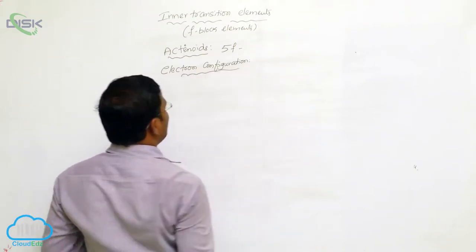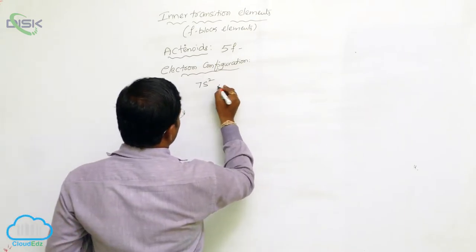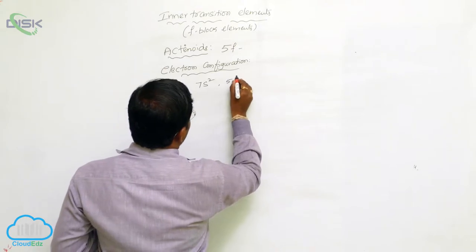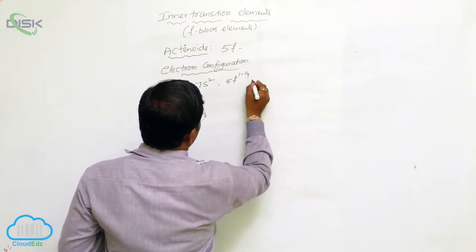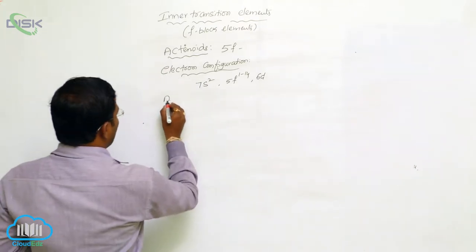The generalized electron configuration is 7s2, 5f1 to 14, in addition to the 6d series.